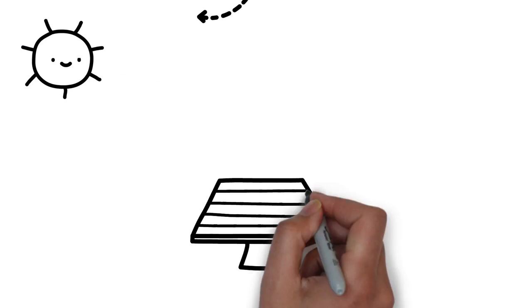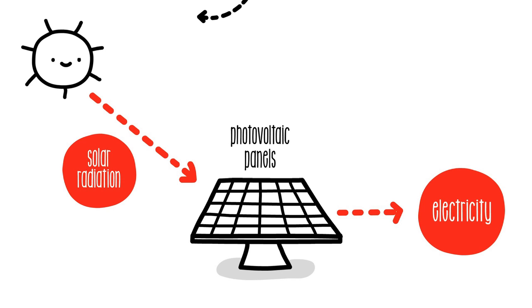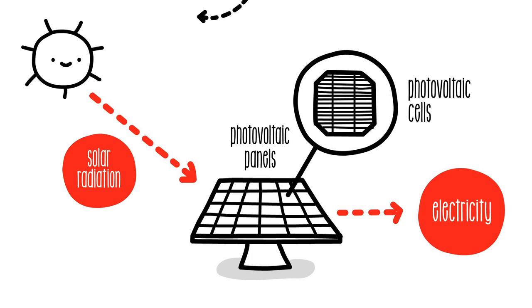Photovoltaic energy turns solar radiation directly into electricity. For this transformation to be carried out, you need photovoltaic panels composed of photovoltaic cells.